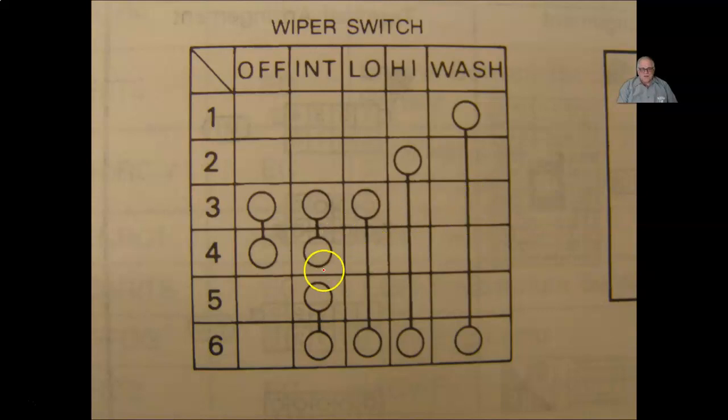With the wiper switch in the off position, you will have continuity between pin 3 and pin 4. Turn it to low position, you will have continuity between pin 3 and pin 6. If there was continuity on one of these other ones, they would have another circle drawn in there, and that would mean there's continuity between 3, 5, and 6.